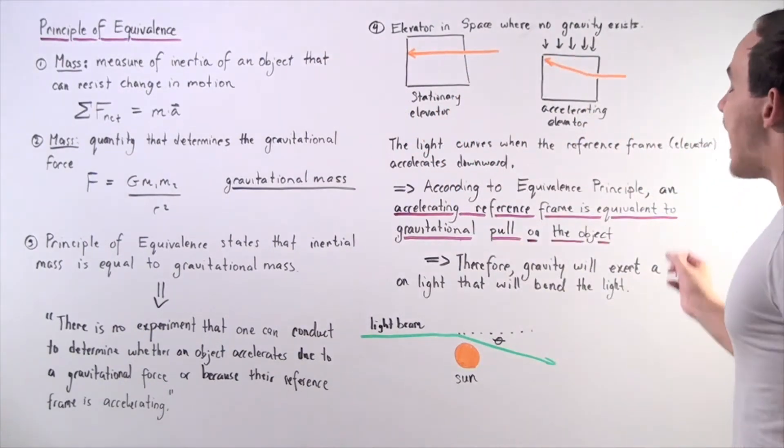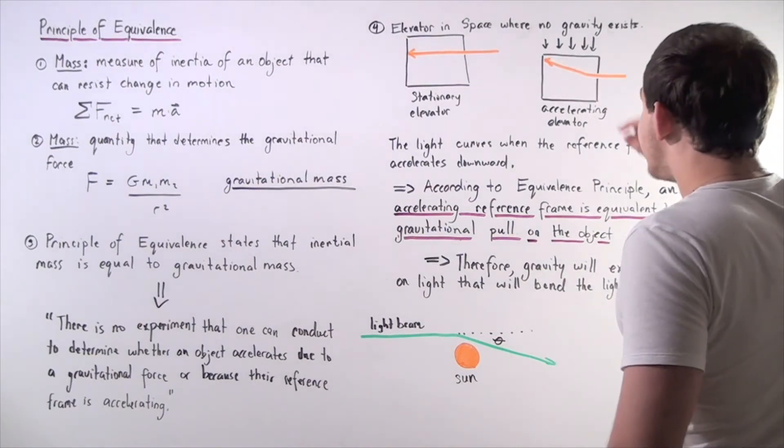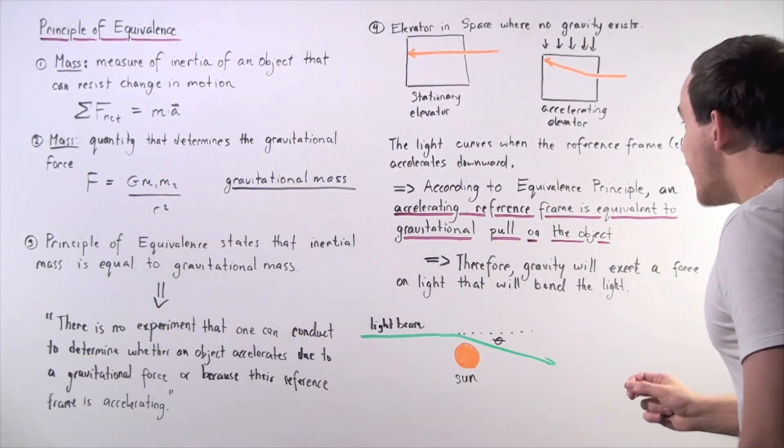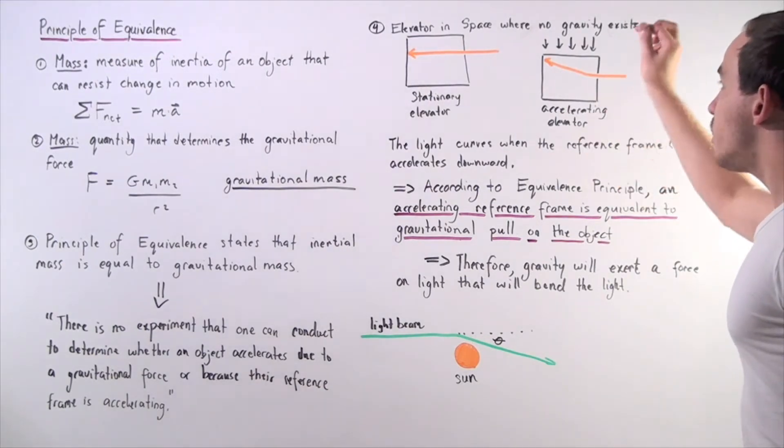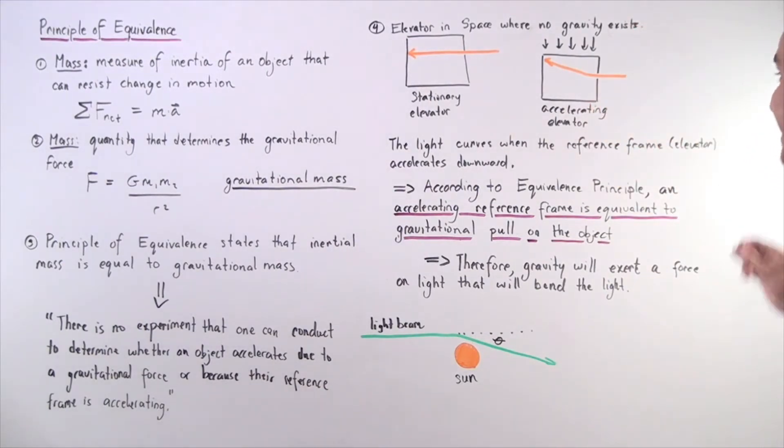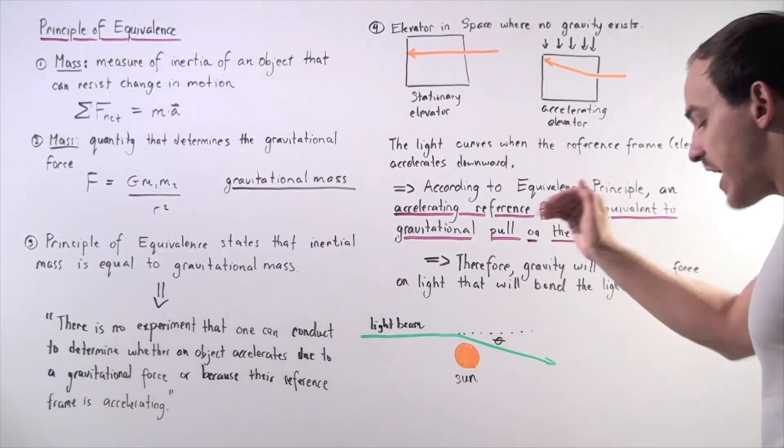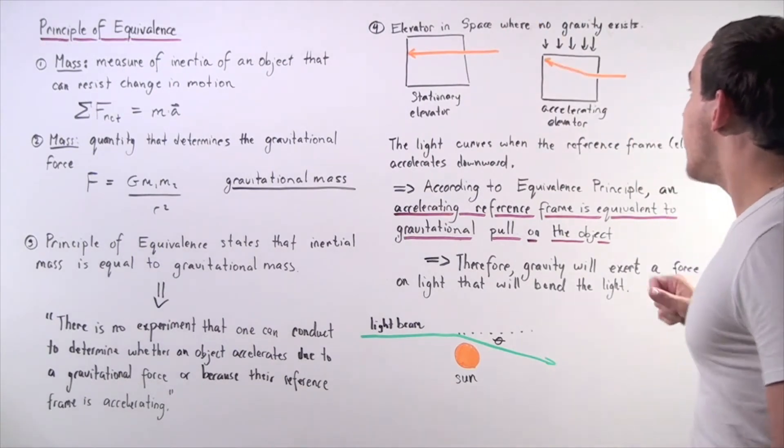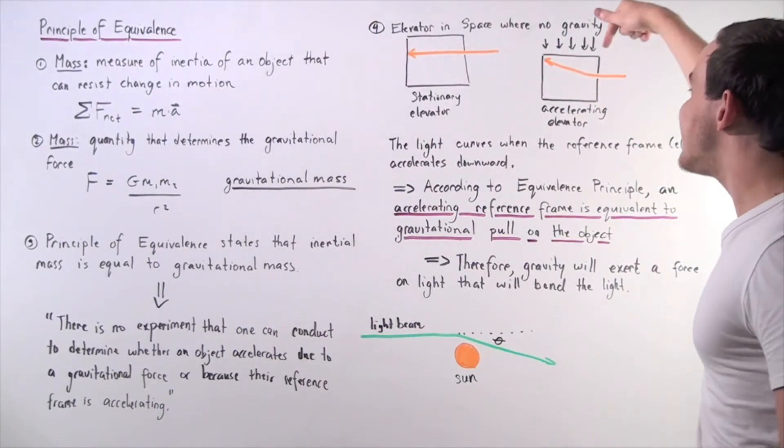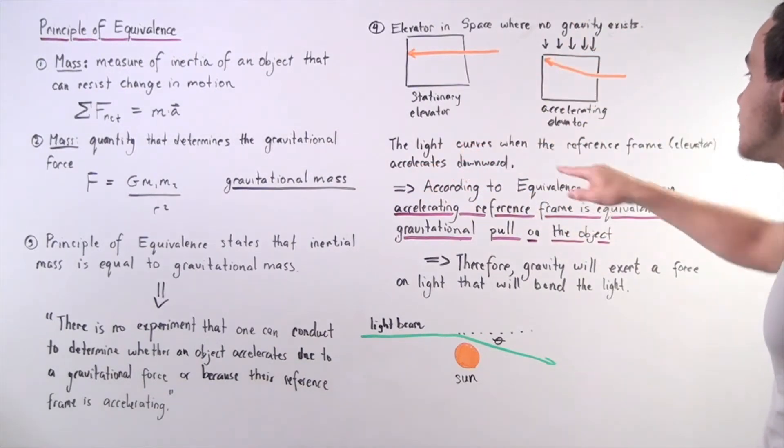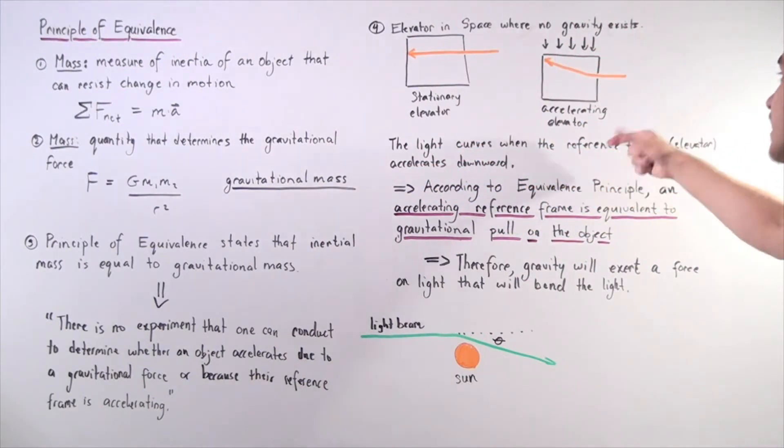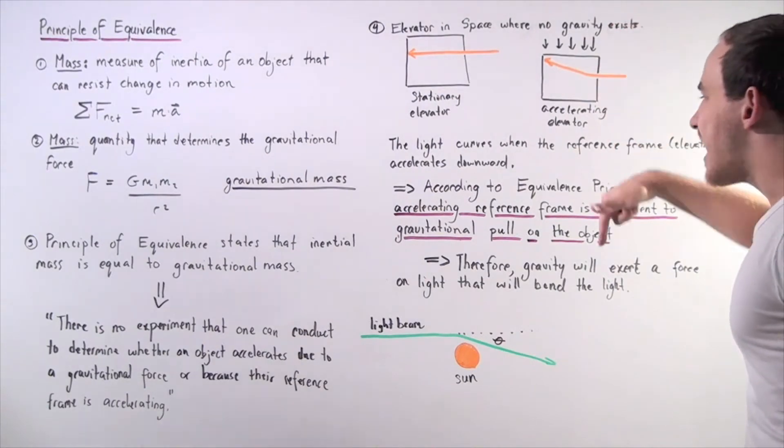Now let's suppose we have a second case. Let's now suppose I make the same incision, but now my elevator is accelerating downward. So notice what happens to the light beam. Now the light beam no longer travels in a straight path. In fact, it will curve because our reference frame is accelerating downward. So the light curves in the second place when the reference frame, the elevator, begins to accelerate downward.